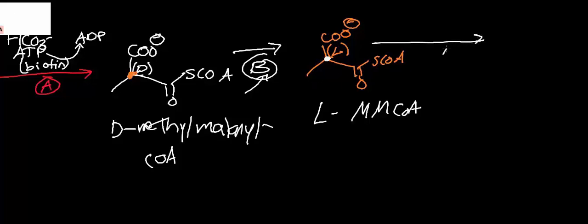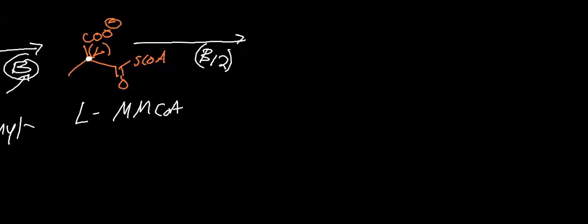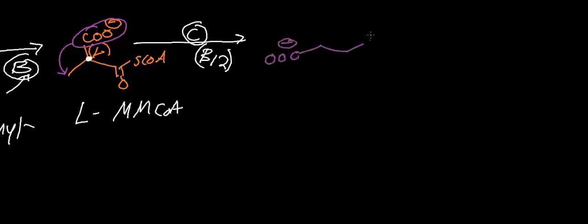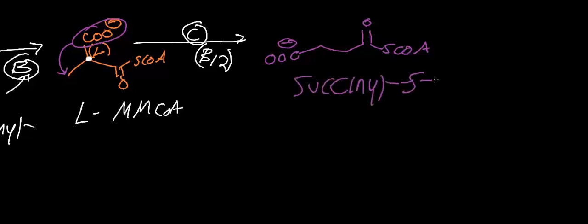The final enzyme in this sequence is a cobalamin-dependent, B12-dependent enzyme called methylmalonyl-CoA mutase. This enzyme moves the carboxyl group to an adjacent position. Pause and see if you can identify the product — it is succinyl-S-CoA, an important intermediate. We have just seen how propionyl-CoA gets converted into succinyl-CoA.